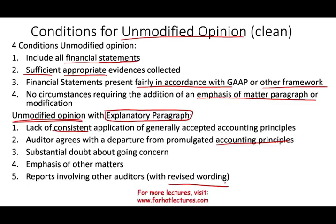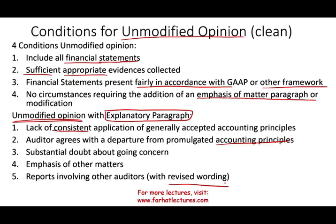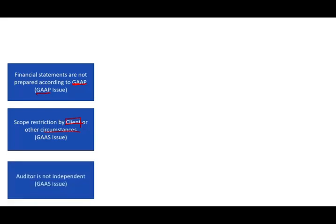What happens if we don't give an unmodified opinion — when unmodified is not justified? We have three circumstances. First, we could have a departure from GAAP: the financial statements are not prepared according to GAAP and the auditor disagrees — this is a GAAP issue. Second, scope restriction either by the client or other circumstances — this is a GAS issue. Third, the auditor may not be independent — also a GAS issue.